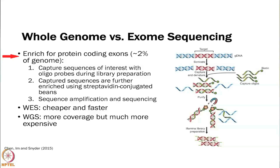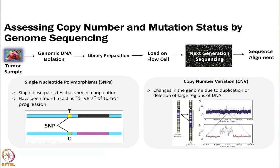You enrich for exons during library prep, then do all the sequence amplification and sequencing, so you are only really looking at the exon — 2 percent of the whole genome — which really cuts back on the cost. It is cheaper and faster. With whole genome sequencing you get more coverage, but it is much more expensive, so depending on what you care about, you decide which one to do.